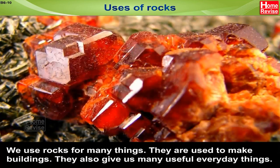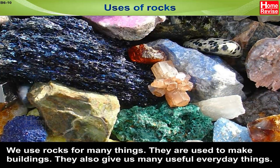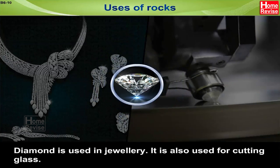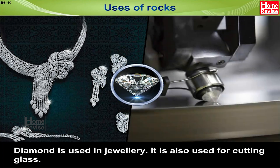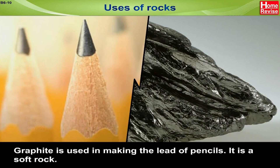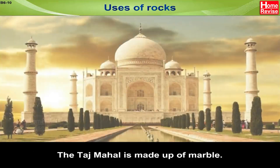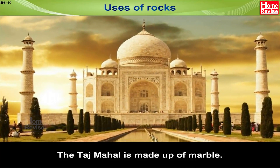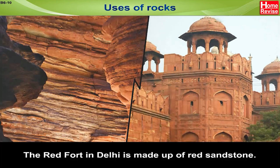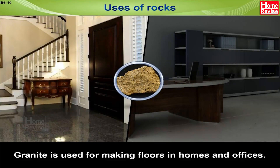Uses of rocks. We use rocks for many things. They are used to make buildings and also give us many useful everyday things. Diamond is used in jewellery and also for cutting glass. Graphite is used in making the lead of pencils — it is a soft rock. Marble is used for making statues and buildings; the Taj Mahal is made of marble. The Red Fort in Delhi is made of red sandstone. Coal is used for burning, and granite is used for making floors in homes and offices.